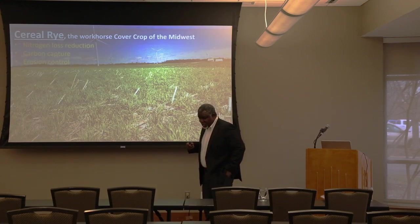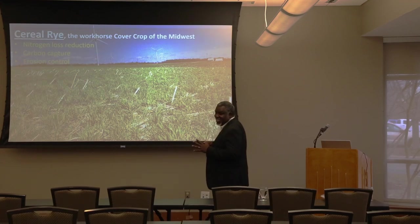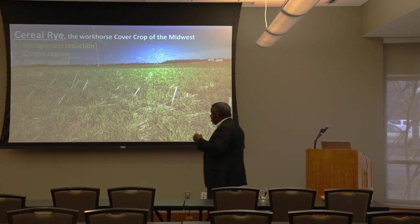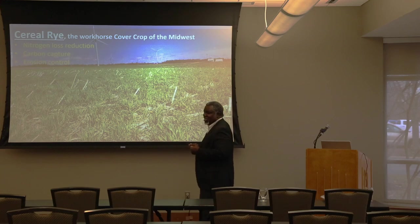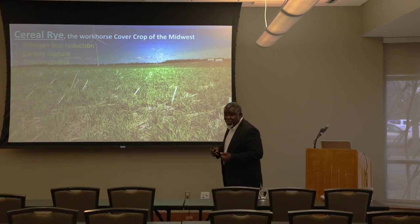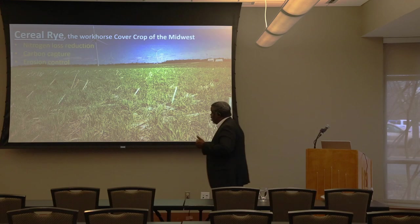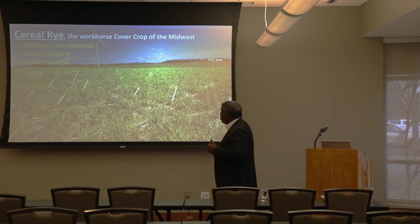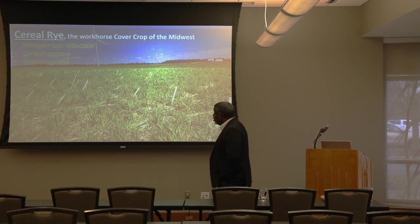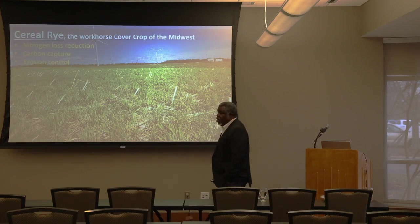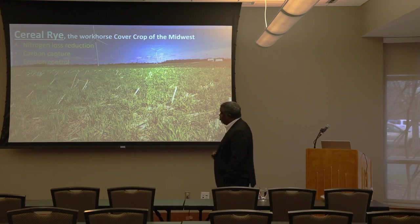When you think about cover crops in the Midwest, in the North Central region, cereal rye is key. It's a cover crop that anybody can use — you throw it out there late, it grows; you throw it out early, it definitely grows; you plant in the spring, it'll grow. It's very good with nitrogen loss reduction, phosphorus, photosynthetic carbon capture as we think about the emerging carbon market, and its original known function: good ground cover — armor — to reduce the impact of rain droplets that detach soil particles and generate surface runoff.